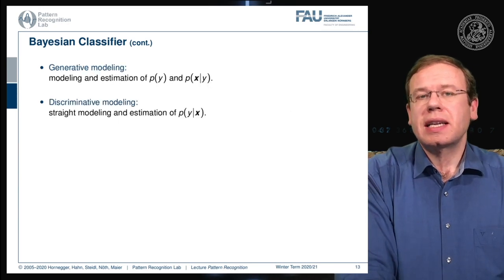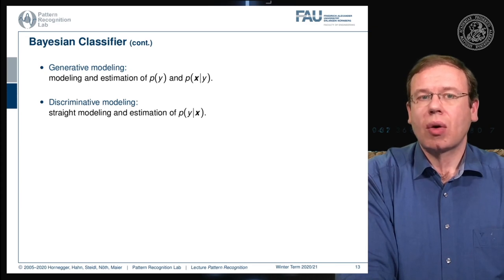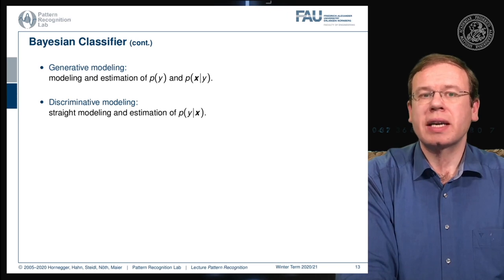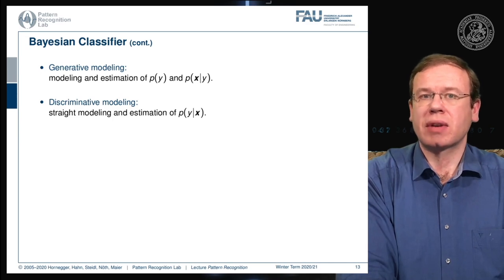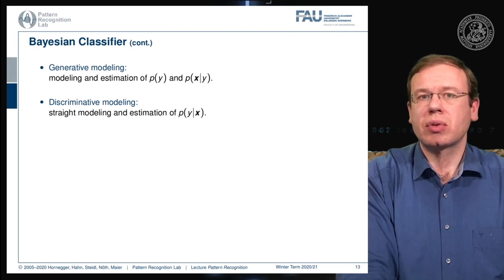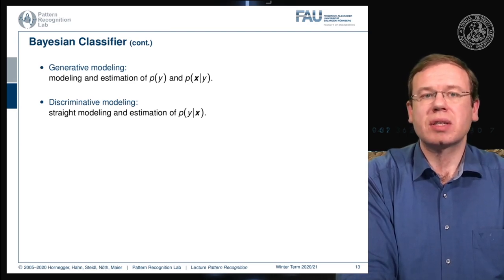We typically analyze our problems either with generative modeling or with discriminative modeling. In generative modeling you typically have a prior probability of the class y and then the distribution of your feature vectors x given the respective class. So here you have a class conditional modeling that is able to describe your entire feature space.